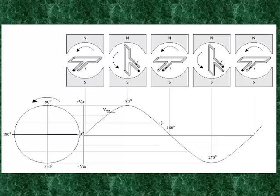As it turns another 90 degrees — which is exactly the opposite from zero — it is again producing no voltage. Once it turns an additional 90 degrees, it is now at 270 degrees.